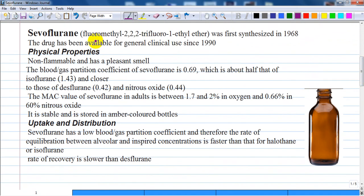Sevoflurane is fluoromethyl trifluoro ethyl ether and it was first synthesized in 1968 and its clinical use was reported in 1971. The initial development was slow because of some apparent toxic effects. The drug has been available for general clinical use since 1990.